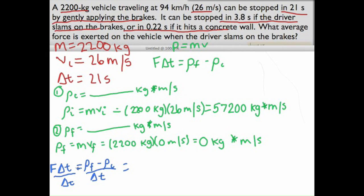And then we can go ahead and plug in our numbers, and that will give us our force. So we'll have our final momentum, which is zero, minus our initial, which is 57,200 kilograms meters per second, and we'll divide by our time, 21 seconds. So you're going to get a negative number, and it'll be in newtons because we're doing a force. This is how you can find a force exerted on the driver when he's just braking gently.